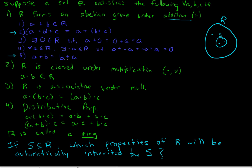Commutativity, again just like associativity, is completely dependent upon the operation chosen. Addition is a commutative operation, so this property is going to hold for any elements of R regardless of which ones you choose to be in S. Closure under multiplication is just like closure under addition — if we take any two elements and multiply them, there's no guarantee the product is also in S. Associativity under multiplication is also dependent upon the operation; multiplication is associative, so this holds for any subset.